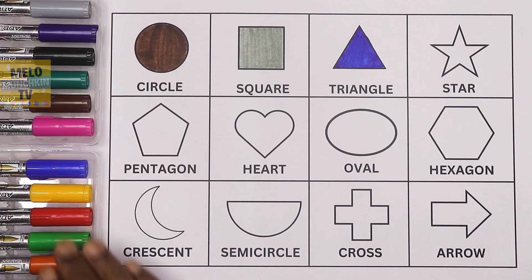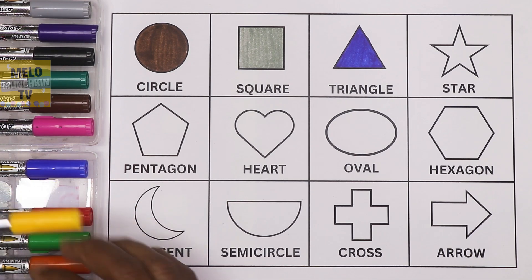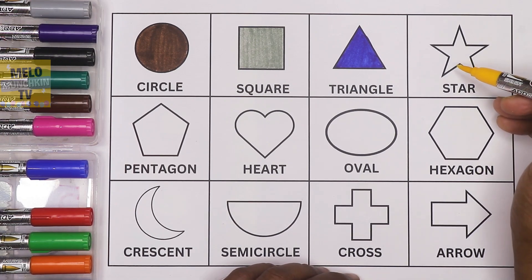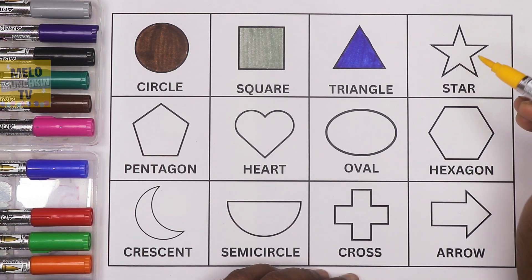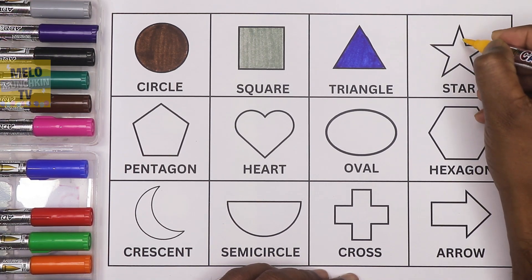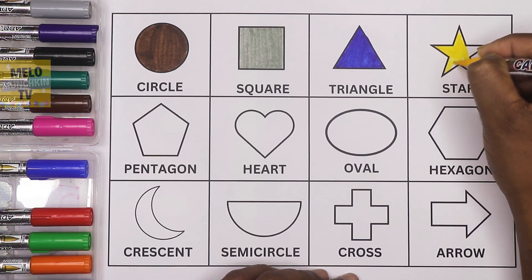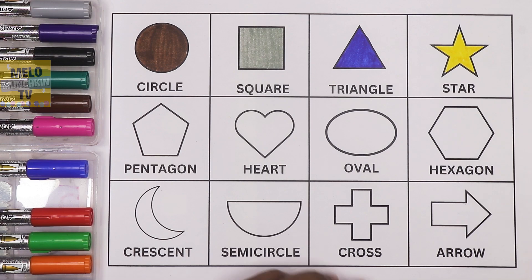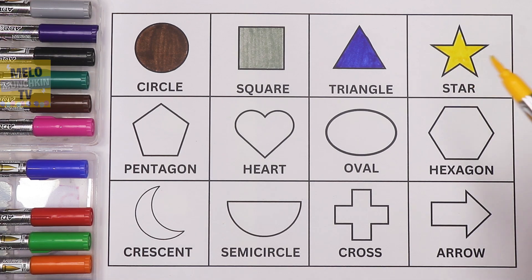Next I'll take yellow color to color this shape. This is a star. So now this is a yellow star, where the shape is star and the color is yellow.